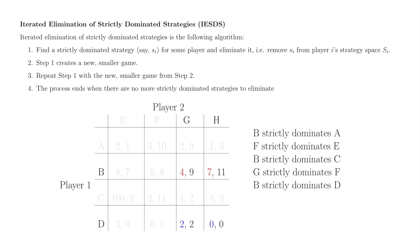B strictly dominates D — eliminate D. H strictly dominates G — eliminate G. The unique Nash Equilibrium of this game is B, H. Thanks so much for watching this video about iterated elimination of strictly dominated strategies. In our next video, we'll talk about another method for finding Nash Equilibrium in matrix games, namely, underlining best responses.